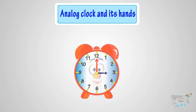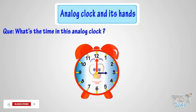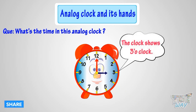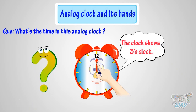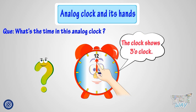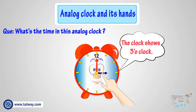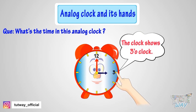Can you tell me what's the time in this analog clock? Let me help you do that. The clock shows 3 o'clock. When the minute hand is at 12, it is time to the hour. But to which hour? The hour hand tells the hour. As the hour hand is pointing at 3, it's 3 o'clock.